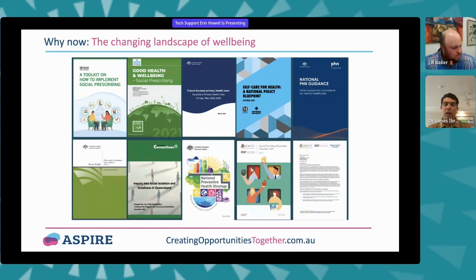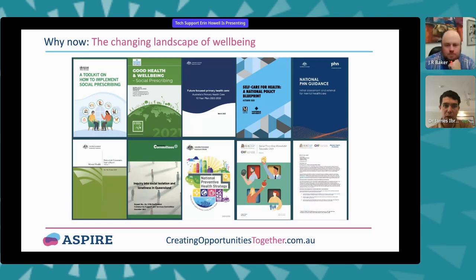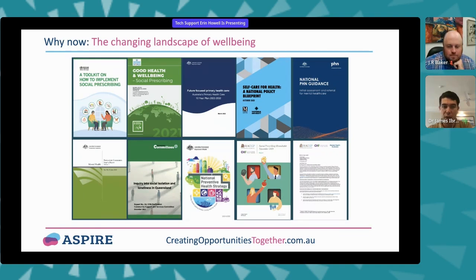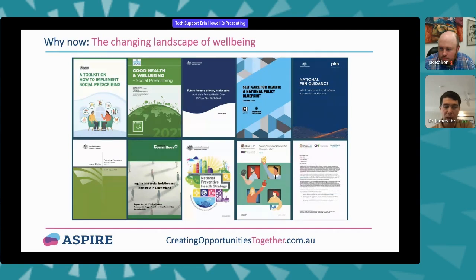From a policy perspective and a systems change perspective, the landscape is changing and there is momentum in Australia. It's still a little disconnected, but there are many driving forces to suggest that systemic change to address loneliness and social isolation is coming over the next few years. We're seeing international recommendations, guidelines, consensus models and frameworks to implement social prescribing internationally, as well as a lot of our own domestic system-influencing papers.